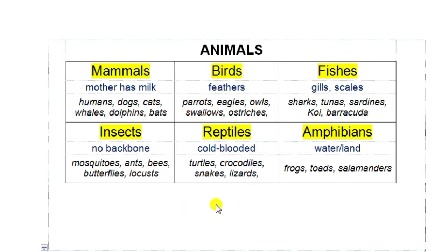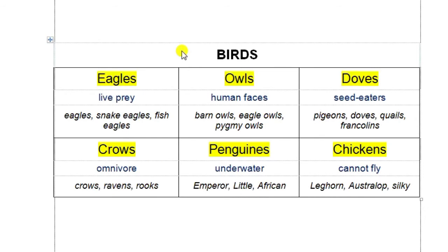We have six mega-families in the animal kingdom, and one of them is birds. We can see there are smaller families within this very large group. For example, there are the eagles. The gene of an eagle is that it's a bird that would only eat something it has killed by itself — it will never eat something that is already dead. And within this group there are smaller groups, and in those groups we find individual species.